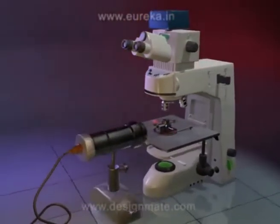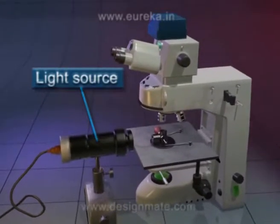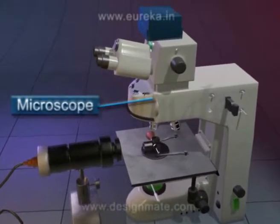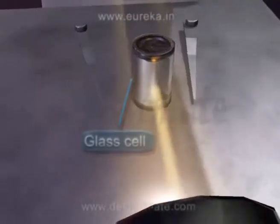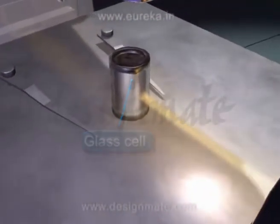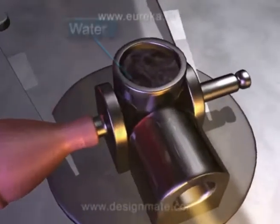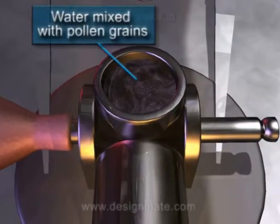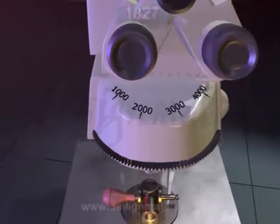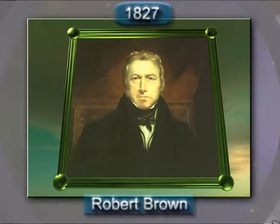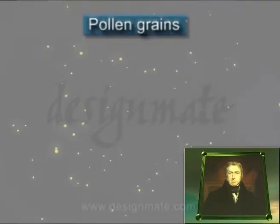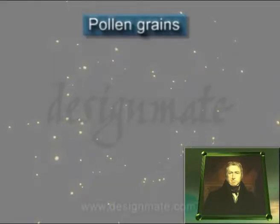Consider an arrangement in which a light source is placed in front of a powerful microscope. A strong beam of light from the light source is focused onto the glass cell of the microscope. This glass cell contains water in which pollen grains are suspended. While studying such an arrangement, in the year 1827, an English biologist, Robert Brown, made an amazing discovery. He observed that the pollen grains performed some random haphazard motion in the water.